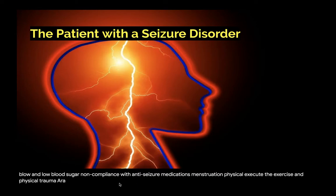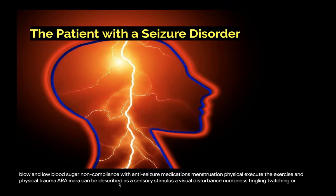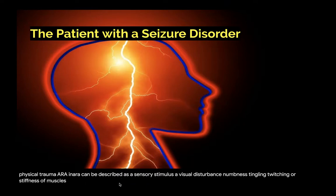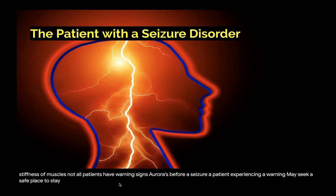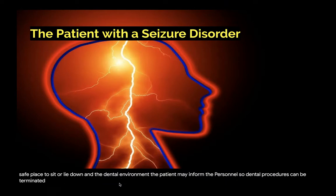An aura can be described as a sensory stimulus, a visual disturbance, numbness, tingling, twitching, or stiffness of muscles. Not all patients have warning signs or auras before a seizure. A patient experiencing a warning may seek a safe place to sit or lie down. In the dental environment, the patient may inform the personnel so dental procedures can be terminated and preparations can be made.